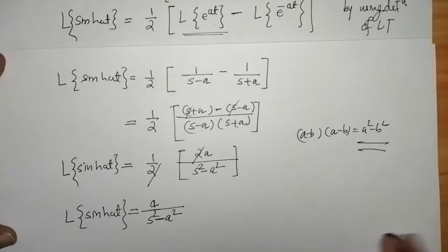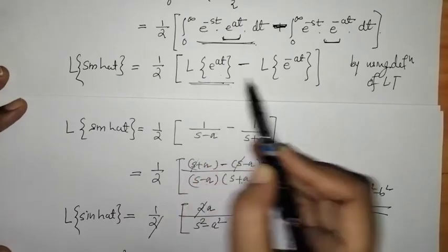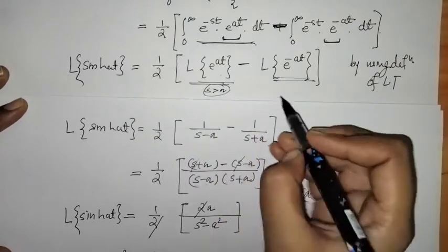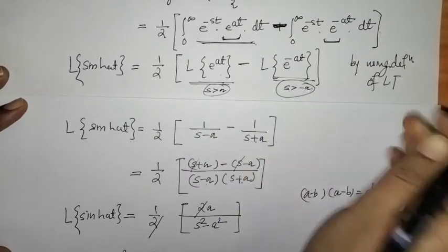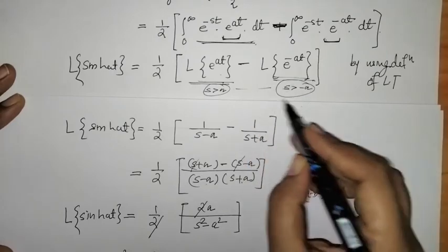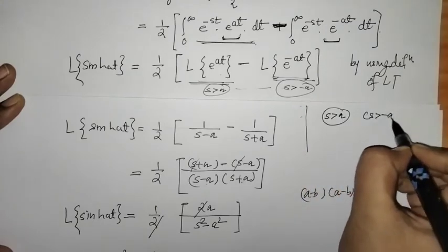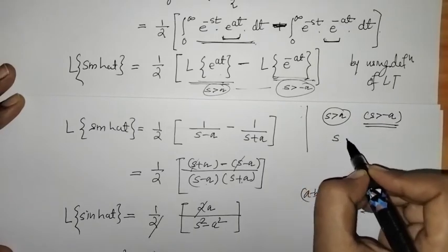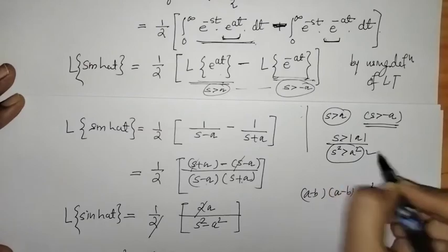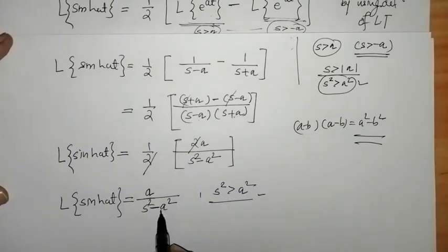We have to check the condition on s. As seen in the last lecture when finding the Laplace of e raised to at and e raised to minus at, the conditions are s greater than a and s greater than minus a. Combining both conditions, we can say s is greater than mod of a, which means s squared is greater than a squared.